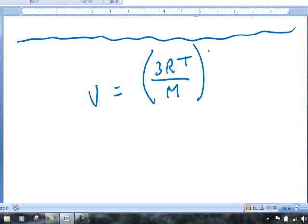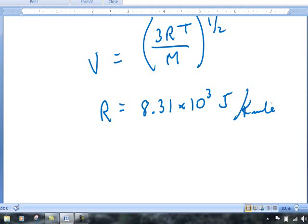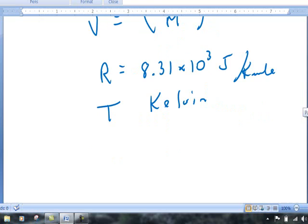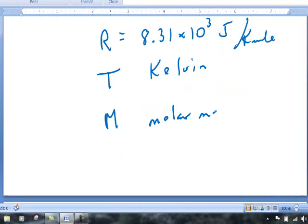In this circumstance, we have to remember R is going to be 8.31 times 10 to the third joules per Kelvin mole for this calculation. And temperature also needs to be in Kelvin. The value that we have for capital M, that's the molar mass of a gas molecule. This would be another equation that is the basis or root of Graham's Law.